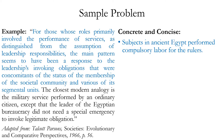This sentence can be expressed as: "Subjects in ancient Egypt performed compulsory labor for the rulers." The word subject here refers to any person who didn't have great political authority in ancient Egypt. The basic idea is that the rulers of ancient Egypt had the right to demand forced labor from their subjects as a kind of tax — a practice also found in ancient China. Notice how simple the idea really is, and how unnecessarily complex it's made by the original sentence.